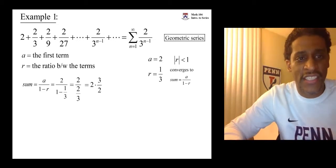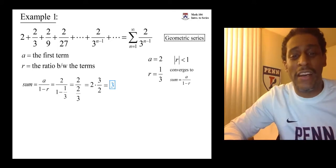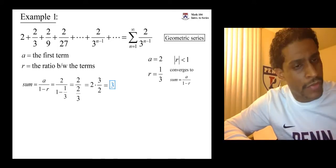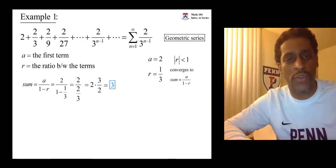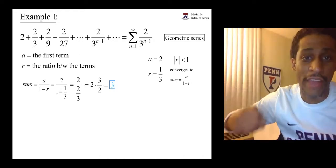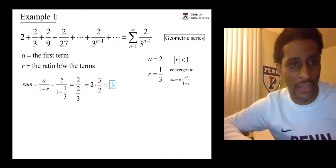Now, the sum of adding up these infinitely many numbers is 3. If you start with 2 and you add 2 thirds and add 2 ninths and add 2 over 27 forever, you arrive at 3. That's our first example of a geometric series.